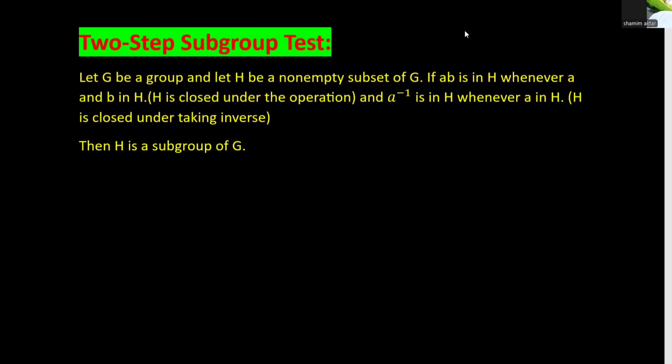Welcome back to my YouTube channel. Today we will discuss the two-step subgroup test, its proof, and a relative example. The two-step subgroup test states that given any group G, if H is a non-empty subset of G, and H is closed under the operation and closed under taking inverses, then H forms a subgroup of G.